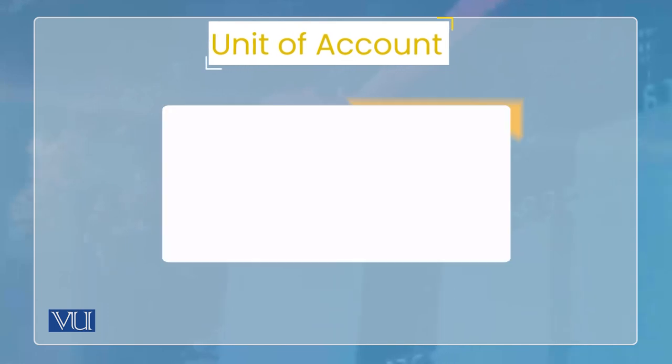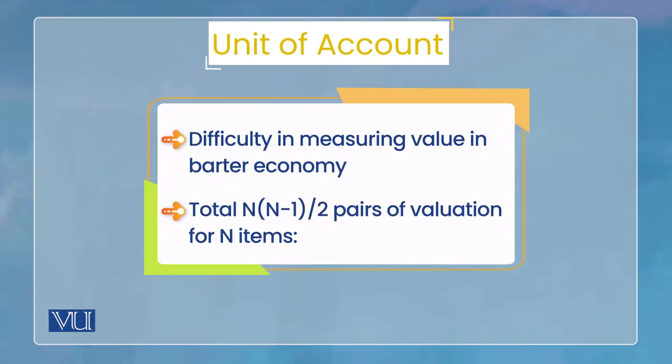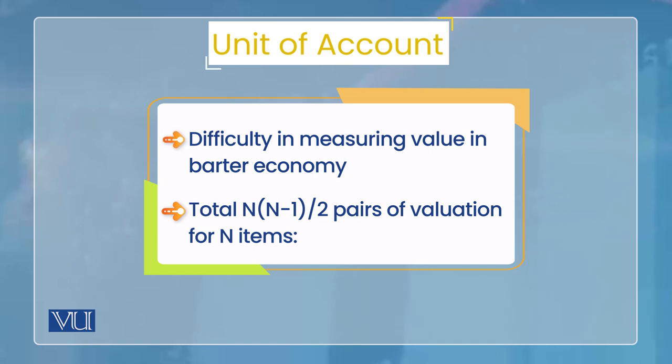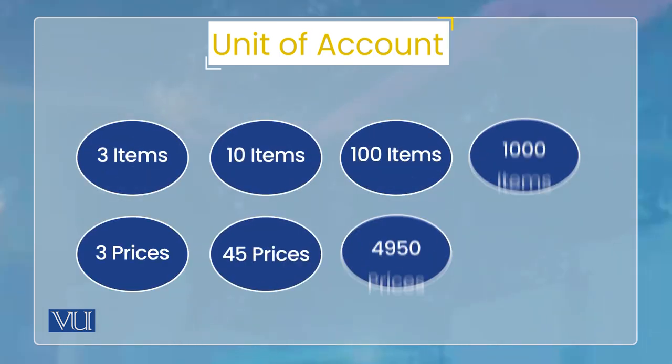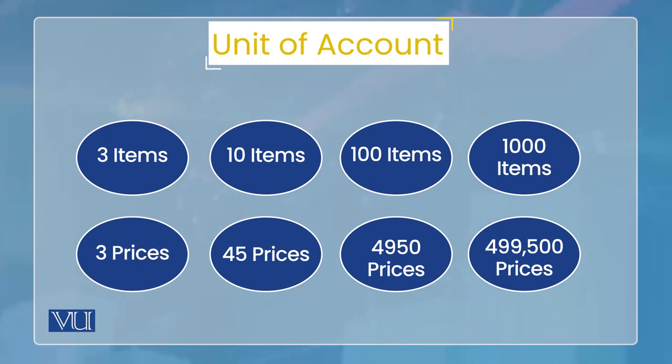If money doesn't exist, we go back to the barter economy. In a barter economy, the unit of account is inefficient. If you have three items, you need to express each price in terms of the other. For example, rice price in terms of wheat, rice price in terms of mango, mango price in terms of wheat, mango price in terms of rice — different commodities, different prices for each combination.